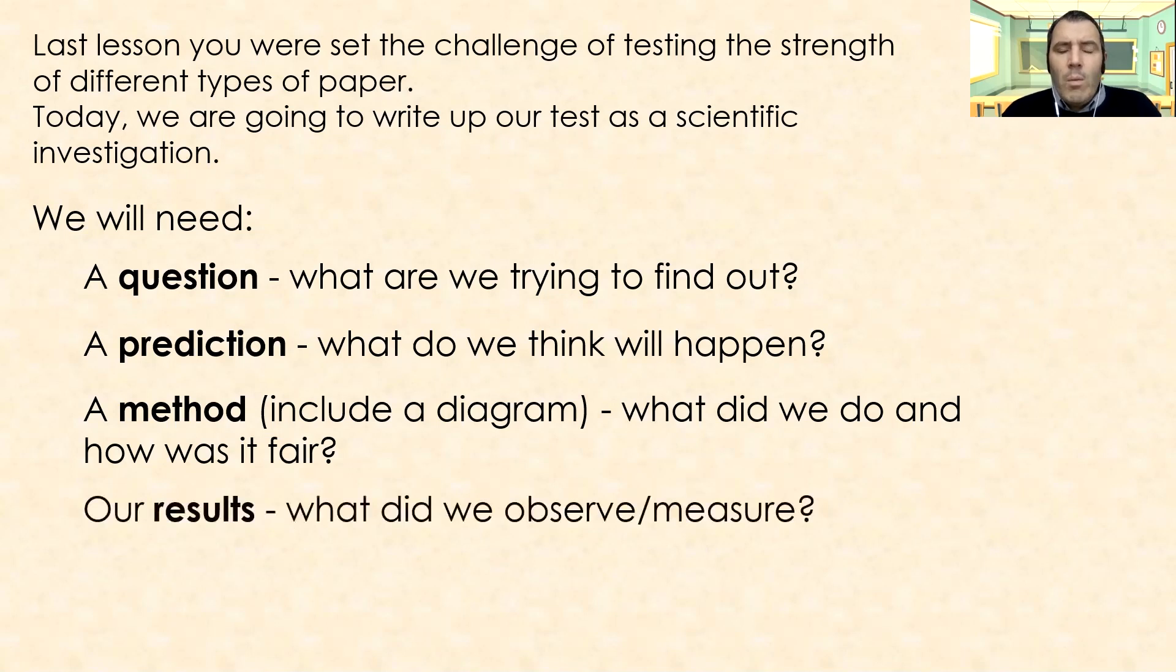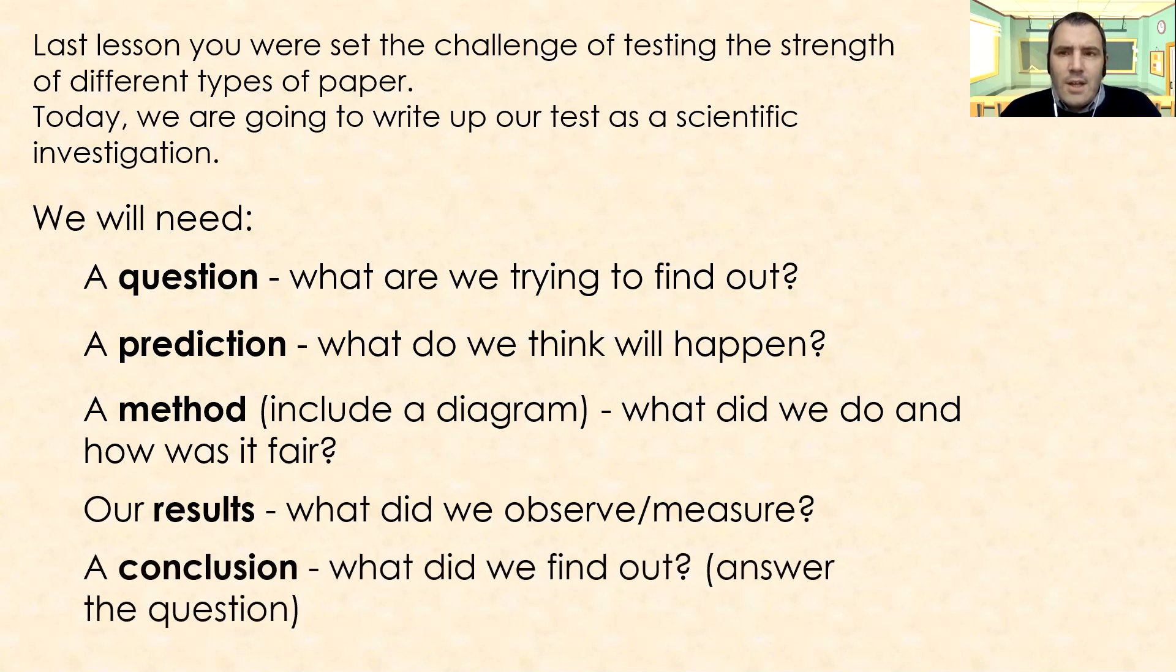Our results. What did we observe? So what did we see? What have we measured? And our conclusion. So what did we find out? This will answer the question we asked right at the beginning of our experiment. So we're trying to find out what was the strongest type of paper. So our conclusion will say, having tested a sample of paper, we've discovered that this particular type of paper was the strongest.